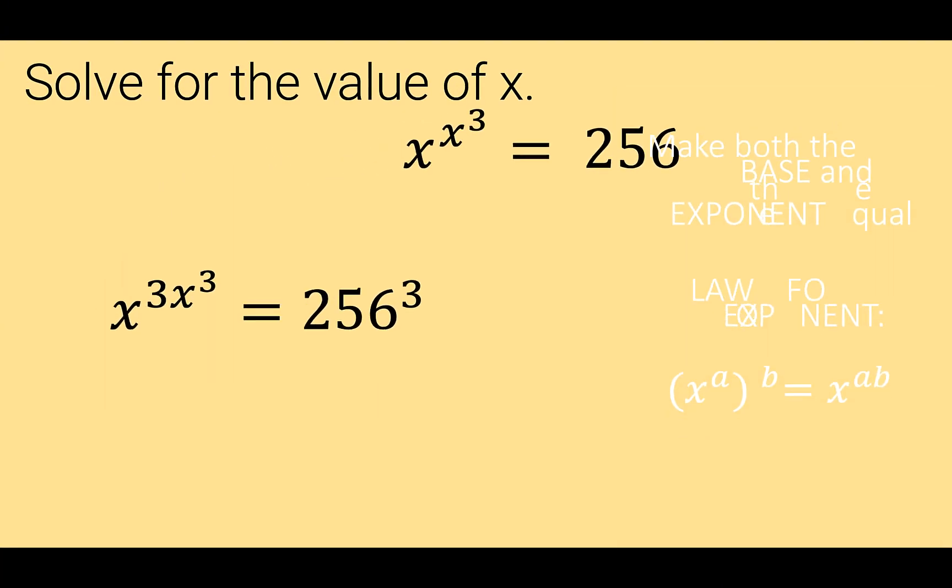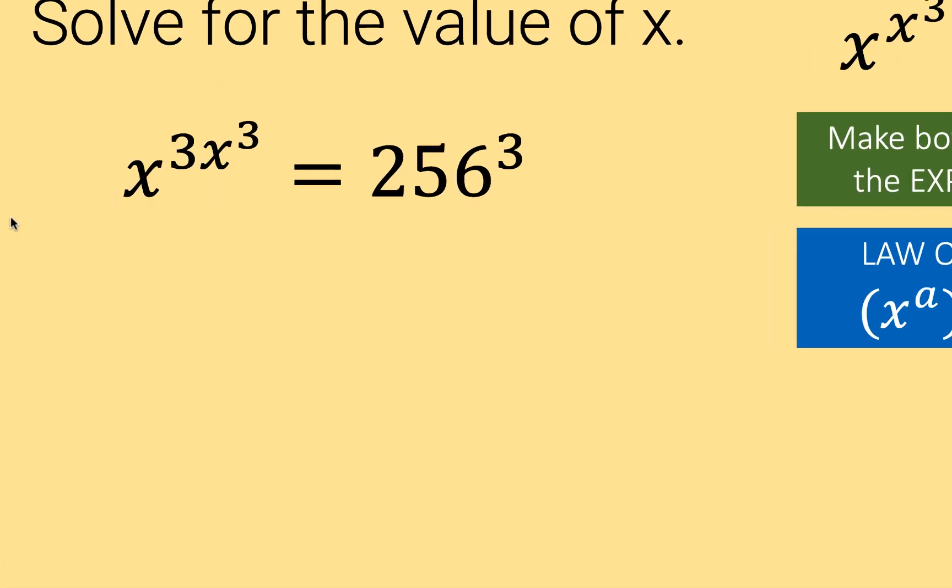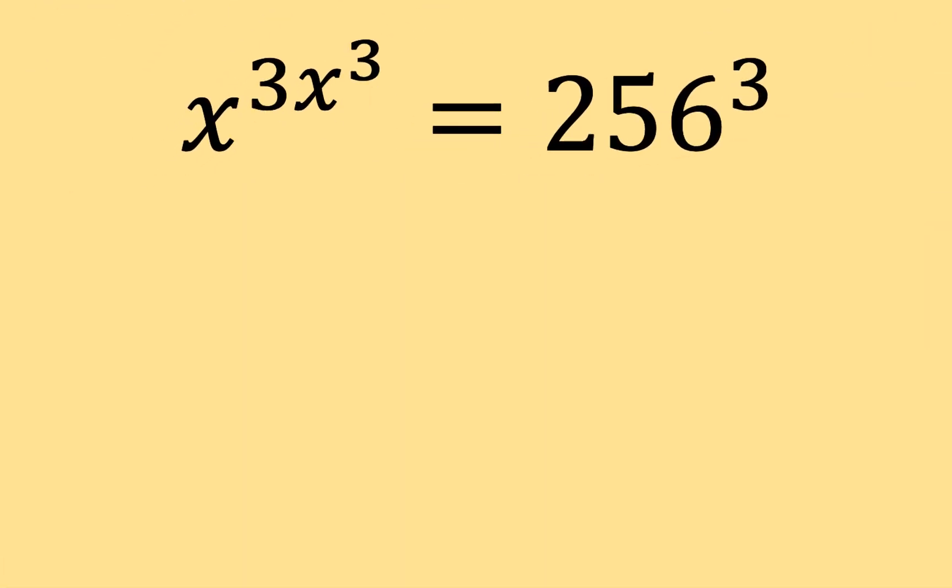Now, applying the converse of this law of exponent, if we have x raised to a times b, that is equal to the quantity x raised to a all raised to b. So here, you can think of 3 as our exponent a here, and you can think of x cubed as our b here.